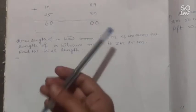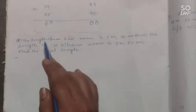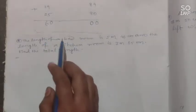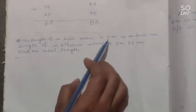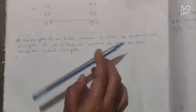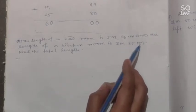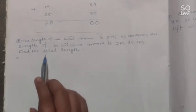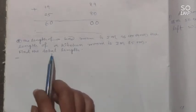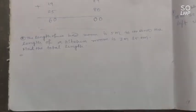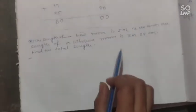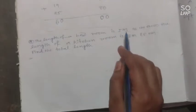Here is a word problem. The length of a bedroom is 5 meter 46 centimeter and the length of a kitchen room is 3 meter 85 centimeter. Find the total length. When you need to find a total amount, you do addition, so we will add these two values.